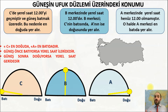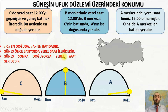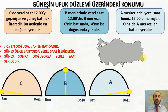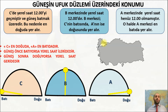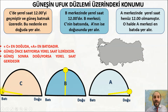Şimdi güneşin ufuk düzlemindeki yeri ve güneşin doğma-batma olayını anlayalım. Doğuda güneş önce doğar; örneğin Hakkari'de önce doğar, önce batar. İstanbul'da sonra doğar, sonra batar. Oruç tutan insanlarımız bilir: iftar vakitleri ilden ile değişiyor. Hakkari'deki 17:00'da iftarını yaparken İstanbul'daki 18:00'da yapıyor; çünkü yerel saati doğudakine göre daha geri.